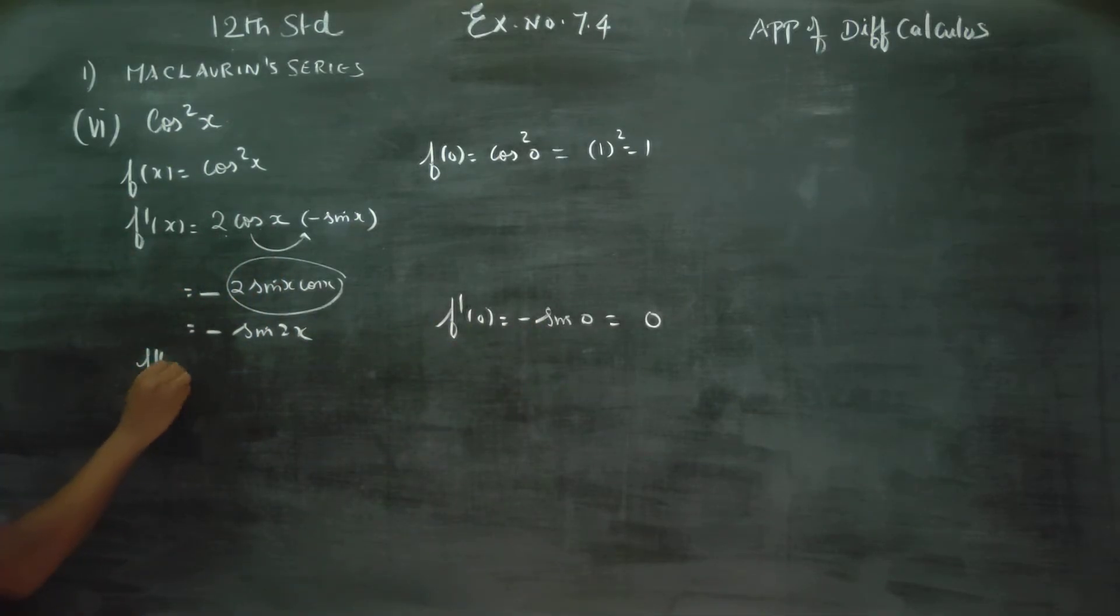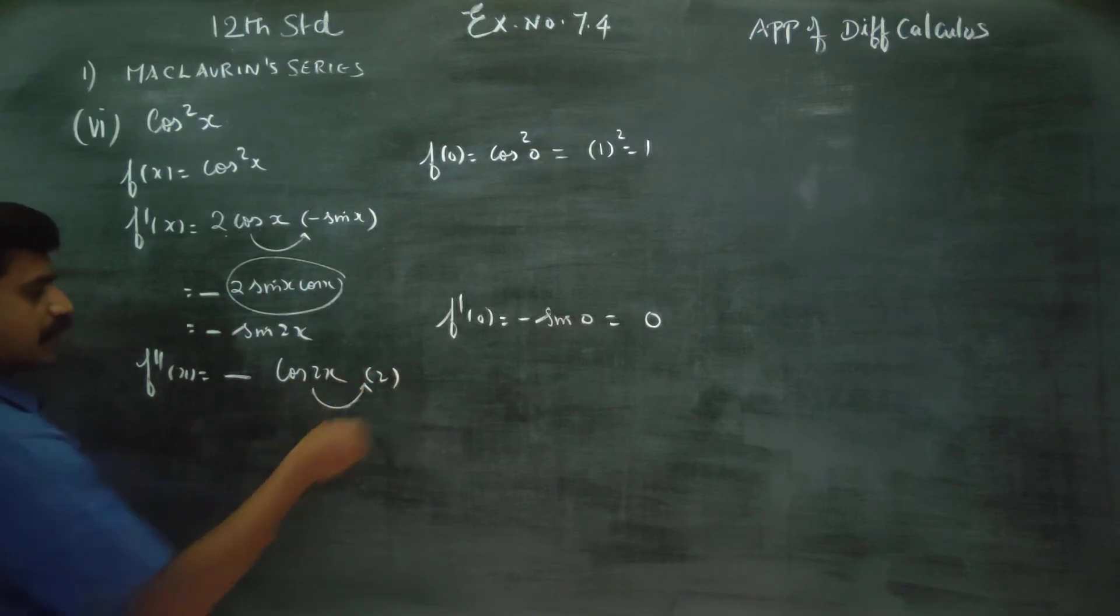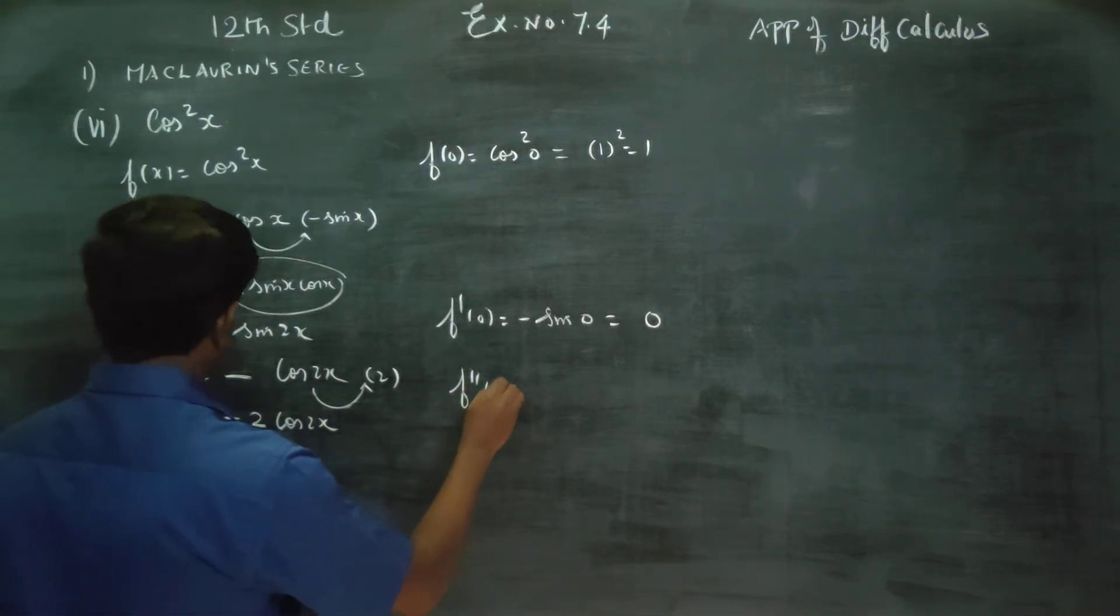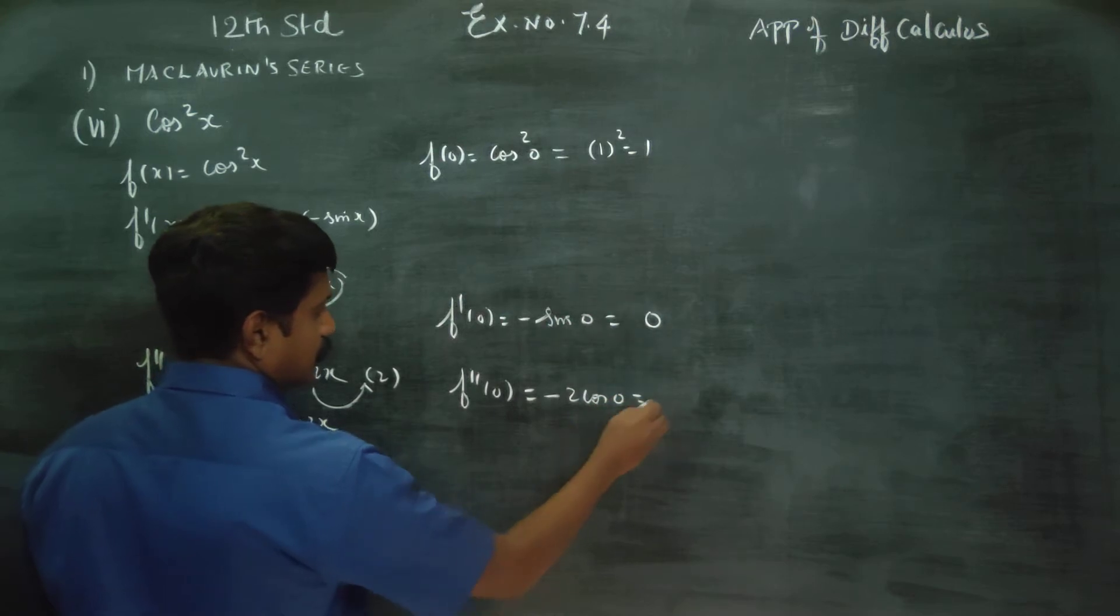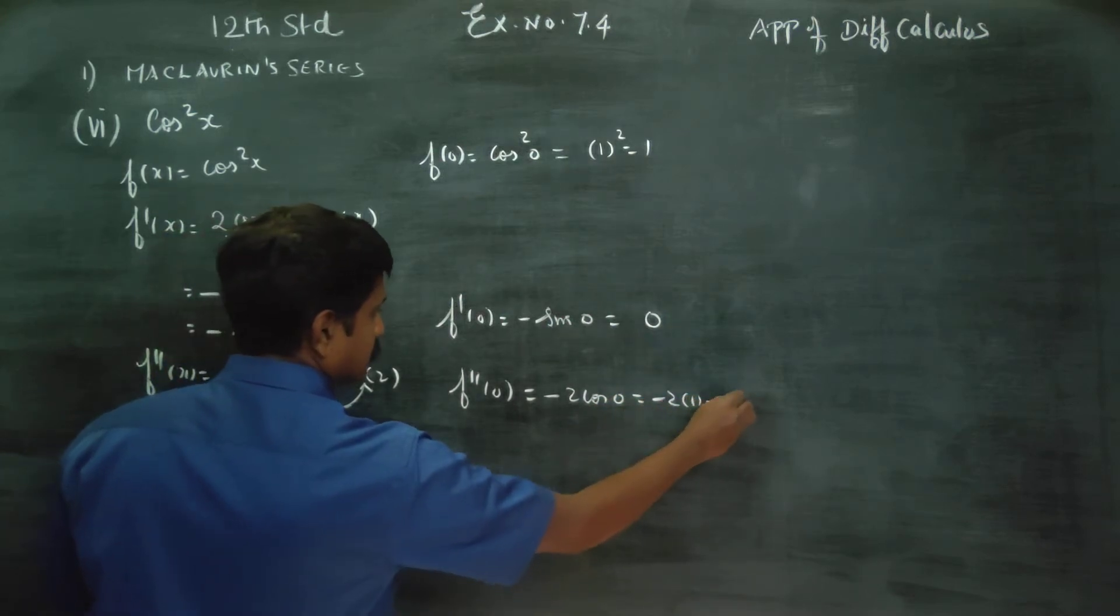After this, f double dash x. Differentiate sin, get cos 2x. Differentiate 2x, get 2. Therefore your answer will be minus 2 cos 2x. f double dash 0 is minus 2 cos 0, cos 0 is 1, minus 2 into 1, answer is minus 2.